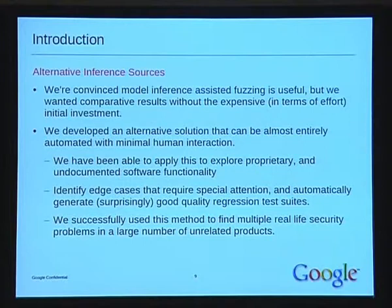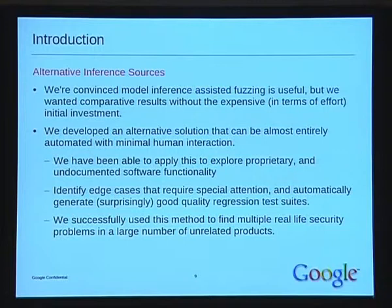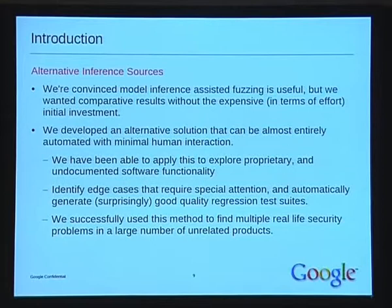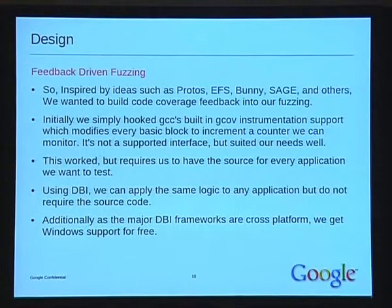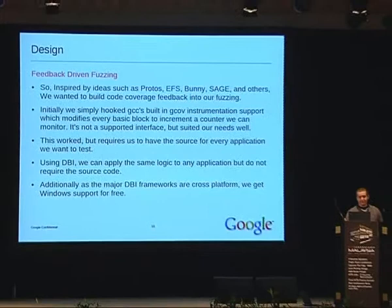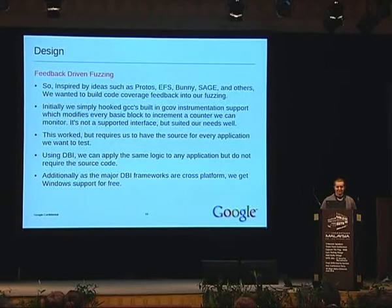It's also useful for automatically generating test suites for programs that apply generically and find bugs even if you haven't looked at the original software — as the Protoss project proved. I've been able to generate pretty good quality regression test suites just using these techniques, and I've been able to find real security problems and break quite a lot of stuff. Inspired by ideas such as Protoss, EFS, Bunny, and Sage from Microsoft Research — which Microsoft never released but published a paper on — this is pretty much required reading if you're interested in the future of fuzzing.